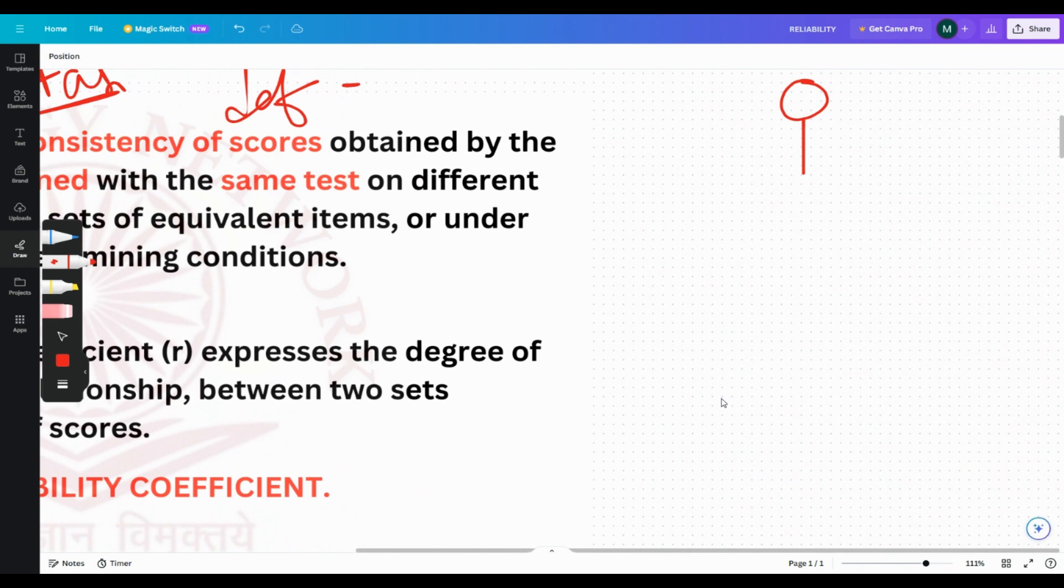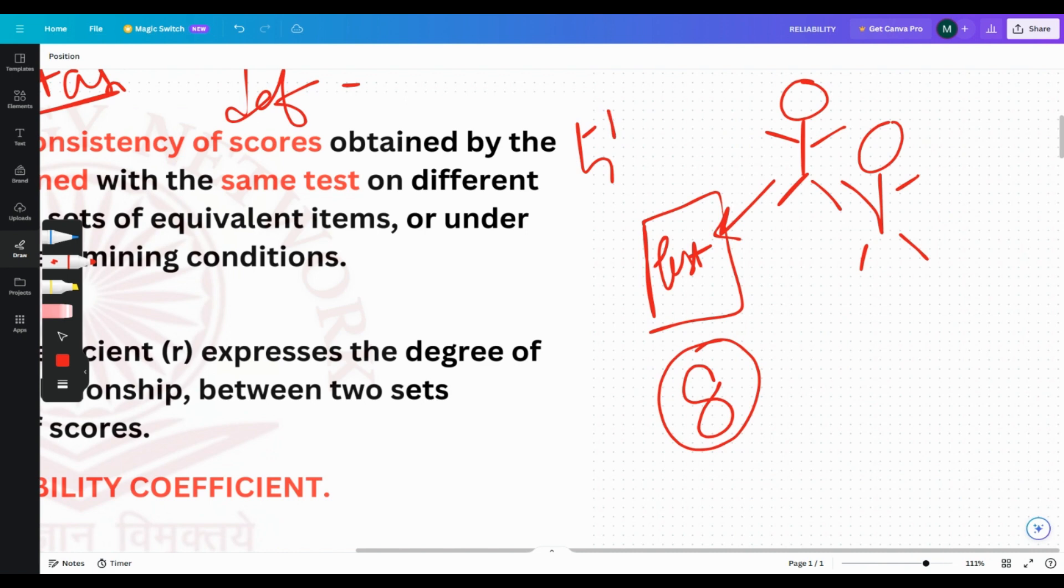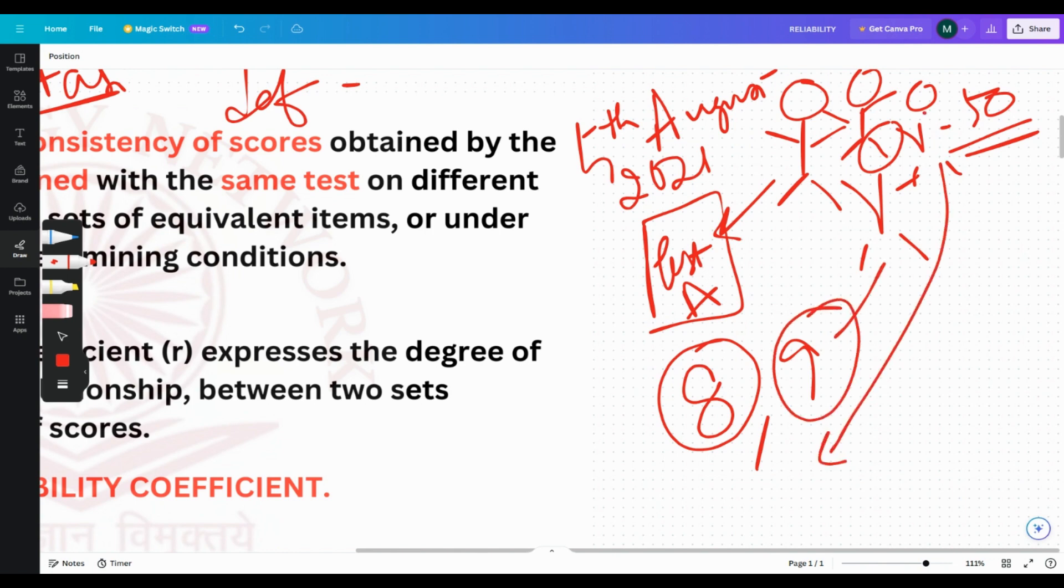I'll explain what reliability means. Suppose there is a person and there is a test. He does the test and gets a score of 8. Suppose there are other people as well. On 5th August 2021, they did test A. There are 50 people who did this test. Everybody got different scores: 8, maybe 9, maybe 22.